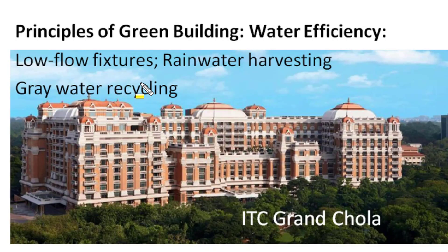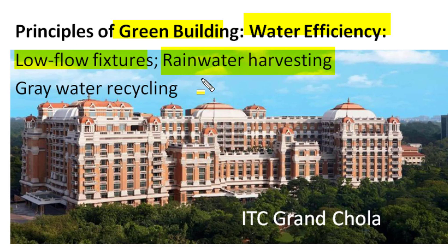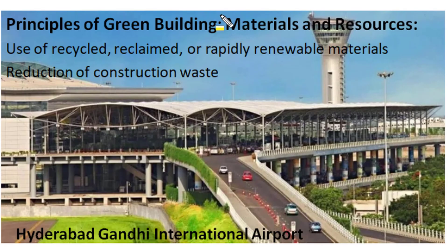Another important principle of green building design is water efficiency. A green building uses low-flow fixtures to conserve water consumption. They also have features to harvest all rainwater and use recycling of grey water for landscaping or flushing in toilets. In Chennai, the ITC Grand Chola is one such green building which inherently achieves water efficiency in its operation.